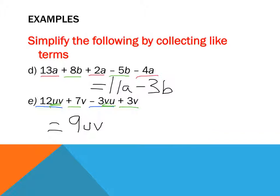Plus 7v plus 3v. So 7v plus 3v becomes 10v. And that's it, guys. That's grouping like terms.